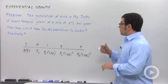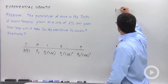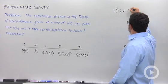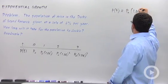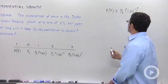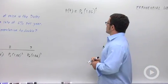This would suggest the formula p sub t equals p sub 0 times 1.06 to the t. And that's an exponential growth formula.